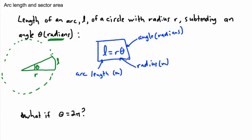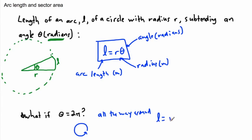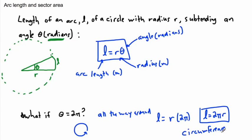This equation is really nice because it tells you what fraction of a whole circle you've walked around. What if theta is 2π? Remember, 2π means all the way around. If you go all the way around, your L is R times 2π, which gives you 2πR — that's your circumference of a circle. So this all makes sense; it's actually defined based on this. If you go all the way around, no big surprise the length you've traveled is the circumference.